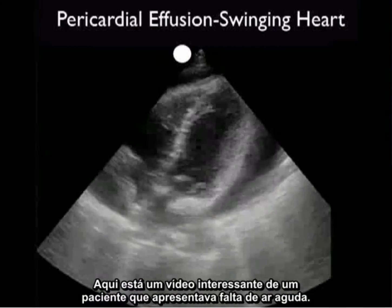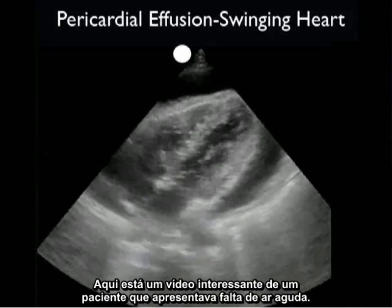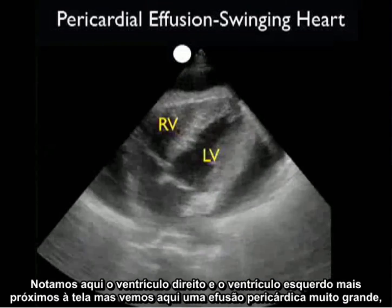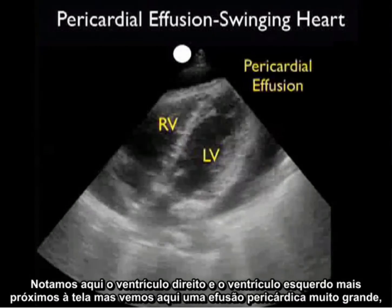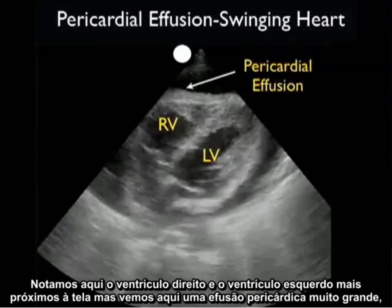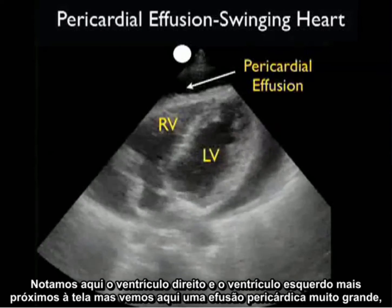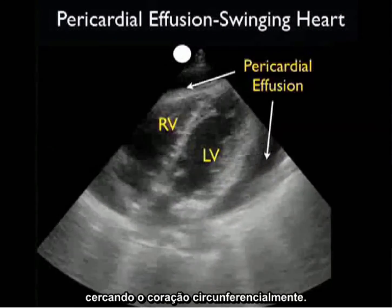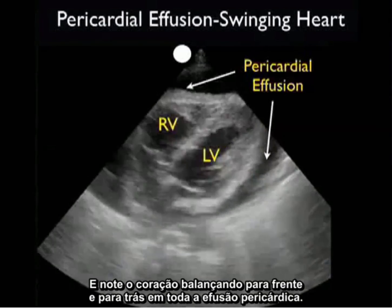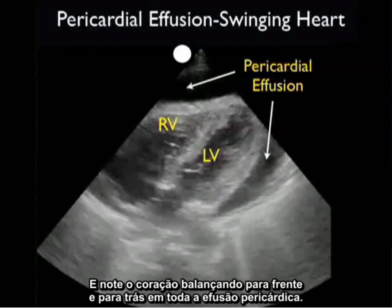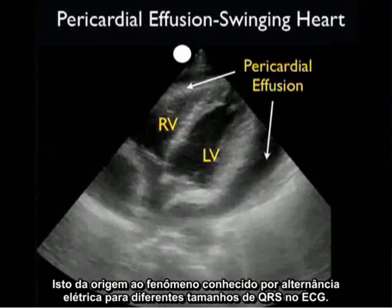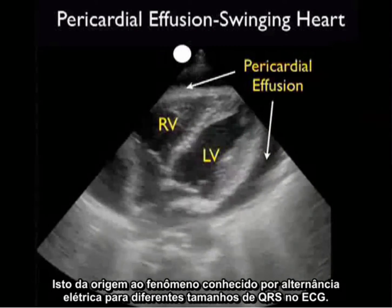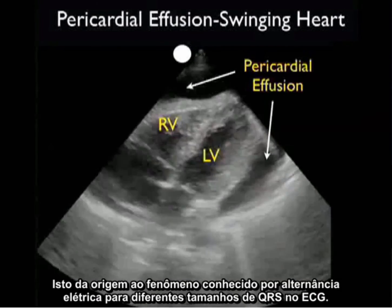Here's an interesting video clip of a patient who presented with acute shortness of breath. What we notice here is the right ventricle and the left ventricle closest to the screen, but we see a very large pericardial effusion circumferentially surrounding the heart. Notice the heart swinging back and forth in all the pericardial effusion. This gives rise to the phenomenon known as electrical alternans, or different sized QRS complexes on the EKG.